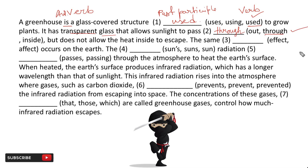Next blank: 'The same [blank] occurs on the earth.' This is a very confusing one — the options are 'effect' or 'affect'. Remember: 'effect' is a noun and 'affect' is a verb. Since we need a noun here after 'same', the correct answer is 'effect'.